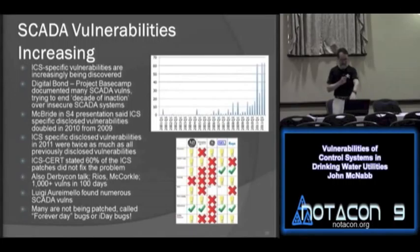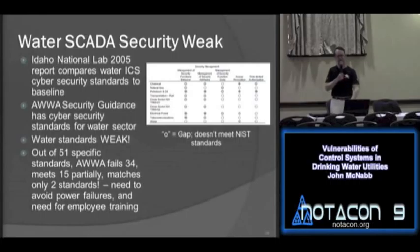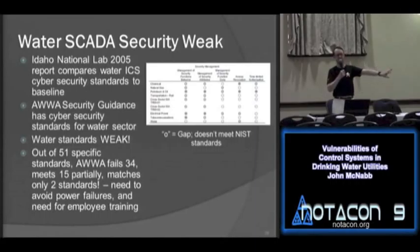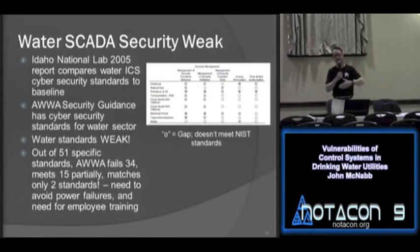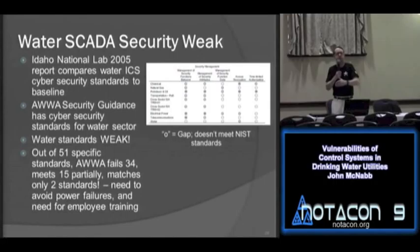Water SCADA security is weak. The Idaho National Laboratories in 2005 compared many industries to a baseline standard for control system security. Out of 51 standards, American Water Works standards for the water industry failed 34, partially met 15, and matched only two — the need to avoid power failures and the need for employee training. Everything else they're not meeting. But that's not even the most important thing, because no one's enforcing the standards — the AWWA standards are voluntary.